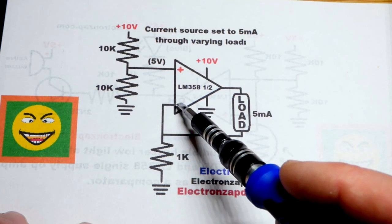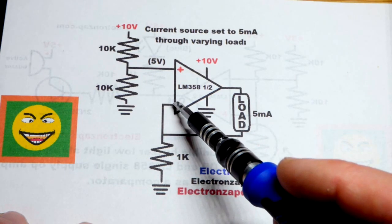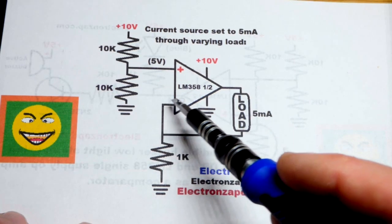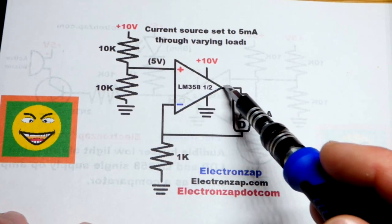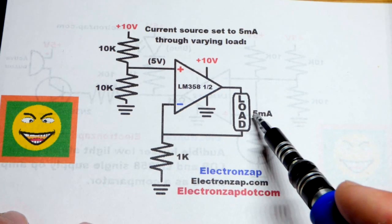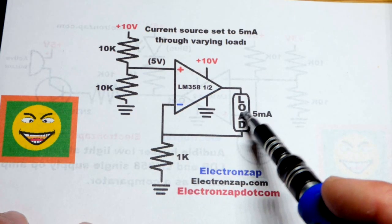The inverting input does not let current in or out. It just senses the voltage. And when it's negative feedback tied to the output, it tries to hold that voltage the same. So we'll have a current flow going through there. It's going to be 5 milliamps even as the load varies.